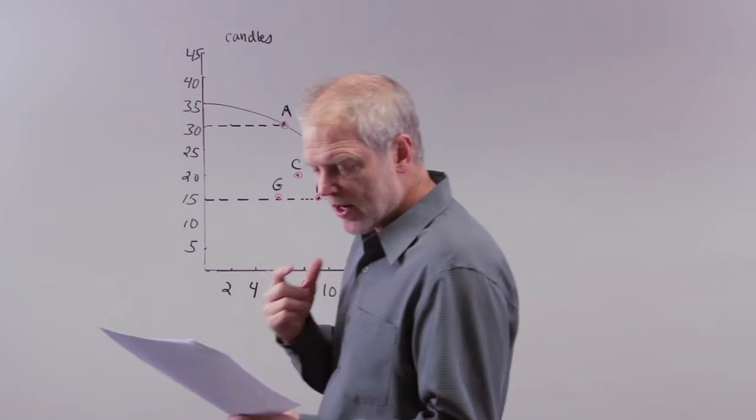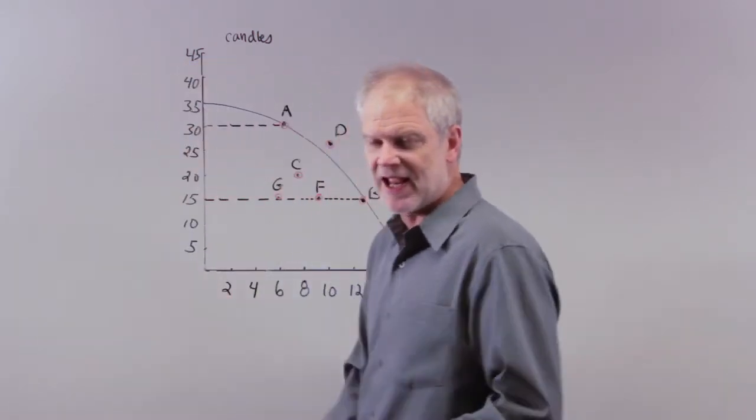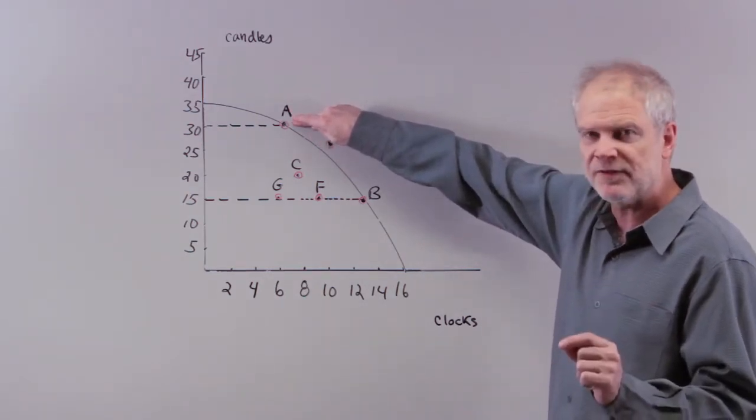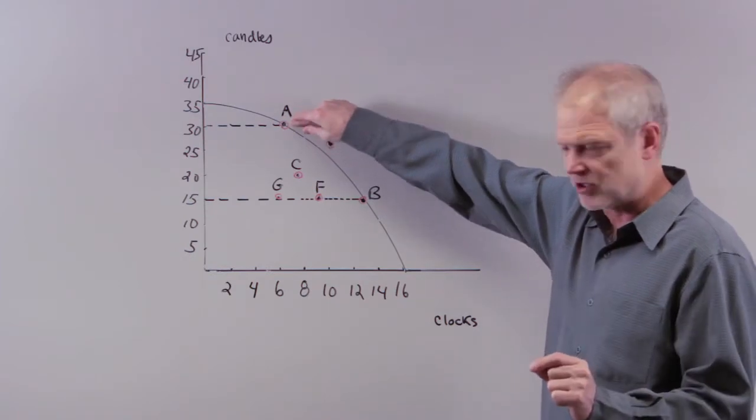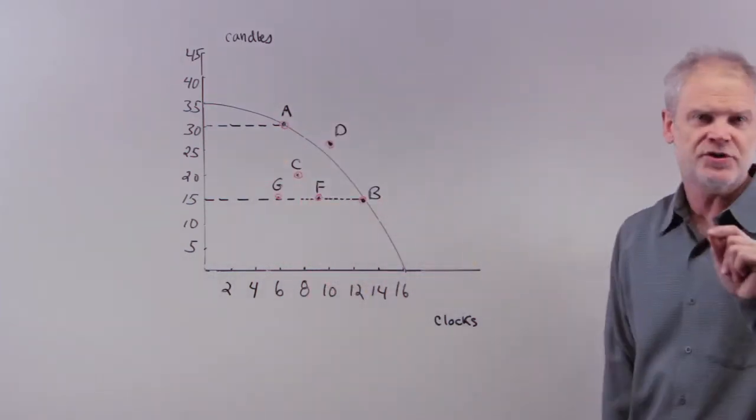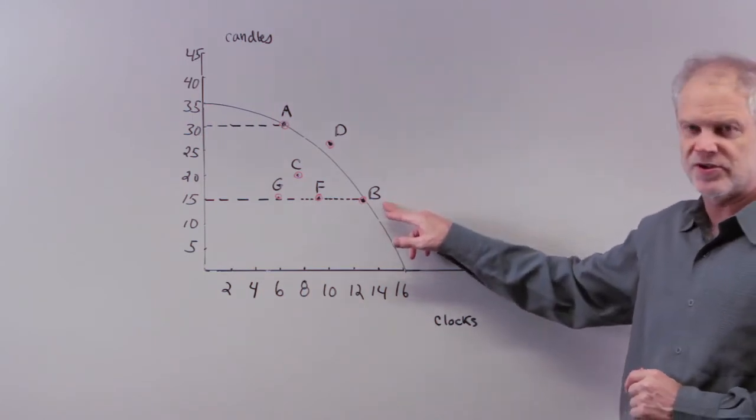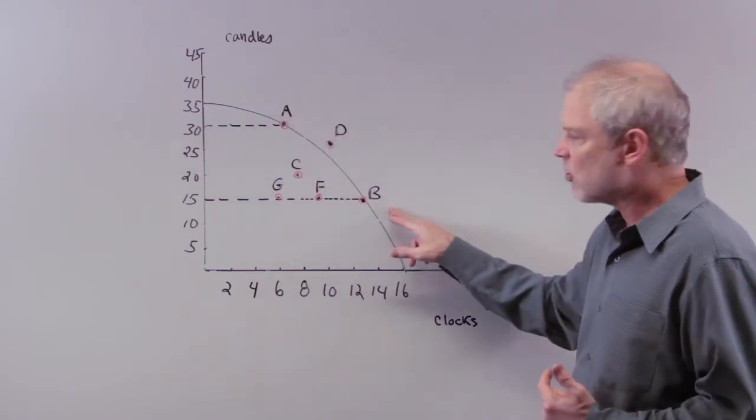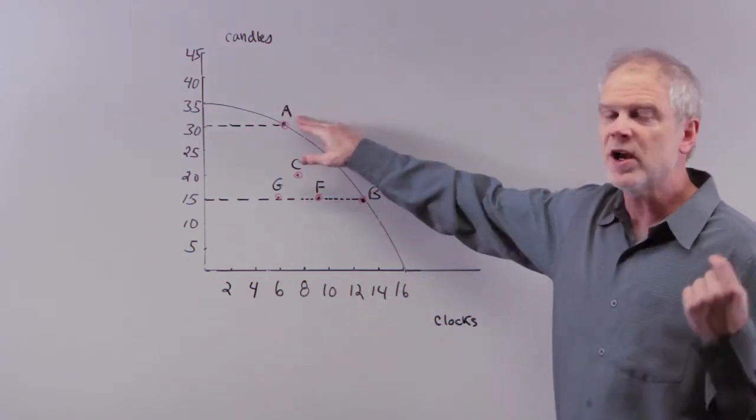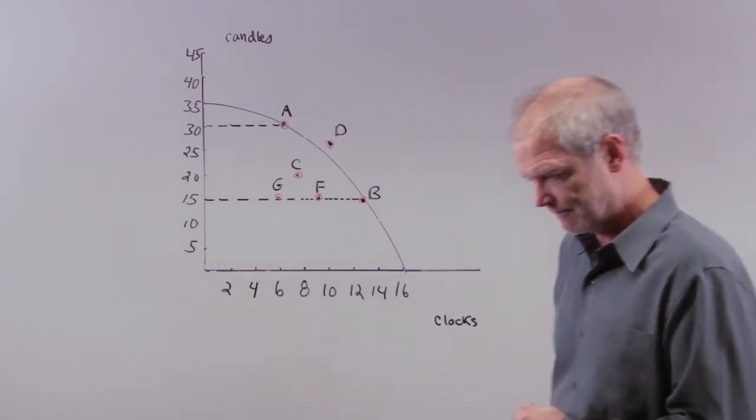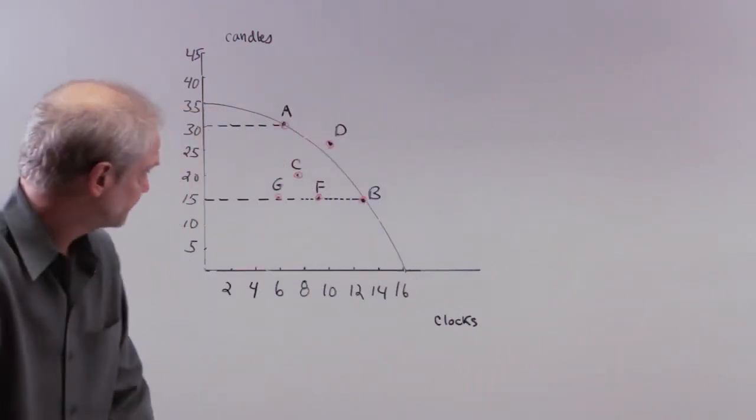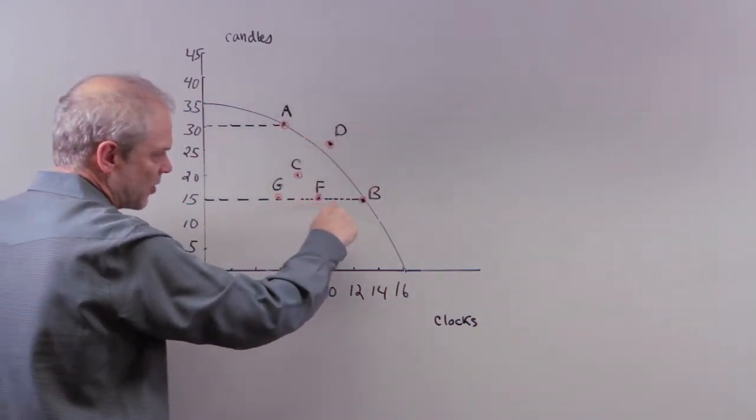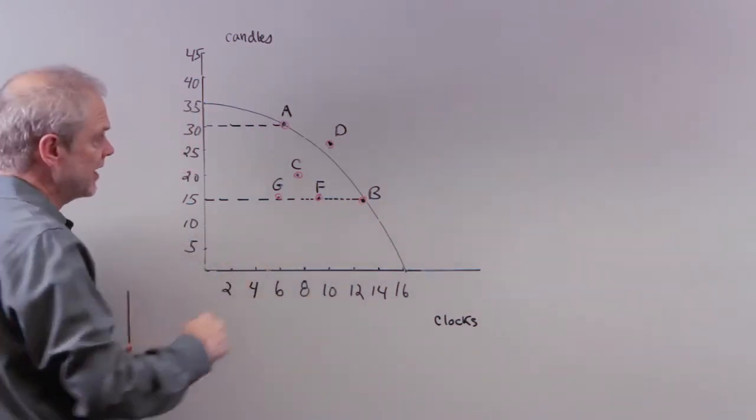And lastly, it says, what is the opportunity cost of moving from point A to point B? So, now you're at point A, and you're on the efficiency curve, right? You're on the production possibility frontier. You're using your resources completely efficiently. Point B is also on the production possibility frontier. You're using your resources completely efficiently. So, the question is, if you want fewer candles and you want more clocks, or you're at A, and you want more clocks, what do you have to give up in terms of candles?